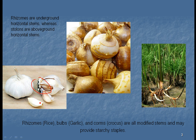Up above here are something called corms, and these are crocuses — one of the first plants that come up. All the information of that plant is stored in there, besides the food that they would need for almost a whole next year.